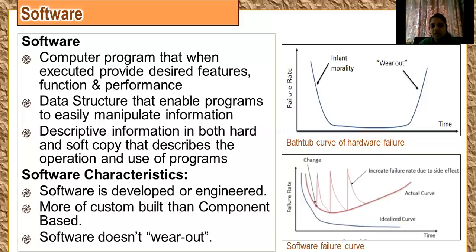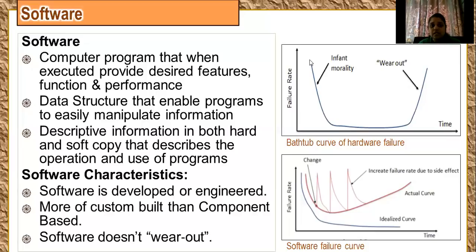The second characteristic is that software doesn't wear out. If you are using hardware, it will exhibit a relatively high failure rate early in life, as you can see in the curve. This is where your hardware has started to work, and relatively it has high errors at the start. As your hardware functions properly, the failure rate will decrease.